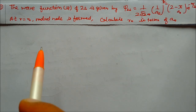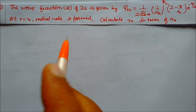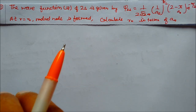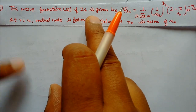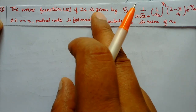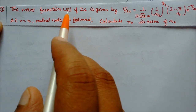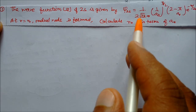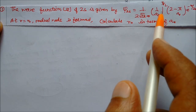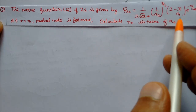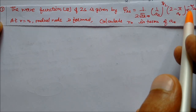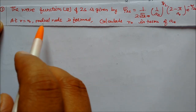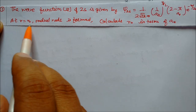We'll solve some problems based on Schrödinger wave equations, focusing only on conceptual problems. The wave function ψ₂s is given by ψ₂s = (1/2)√(32π) · (1/a₀)^(3/2) · (2 - r/a₀) · e^(-r/2a₀). At r = r₀, the radial node is one, so at this point there is a radial node.